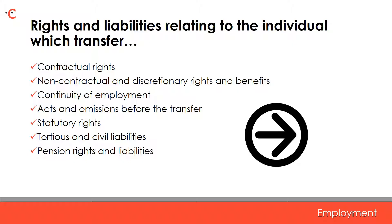Next up is continuity of employment. A TUPE transfer will not break continuity of service. Therefore, if for example a transferring employee has 14 months service at the time of the transfer, they will only need to work for the transferor for a further 10 months before requiring ordinary unfair dismissal rights and the right to a statutory redundancy payment, for example. Acts and omissions before the transfer — any acts or omissions of the transferor before the transfer are treated as having been done by the transferee. For example, the transferee will inherit the discriminatory acts of the transferor pre-transfer.